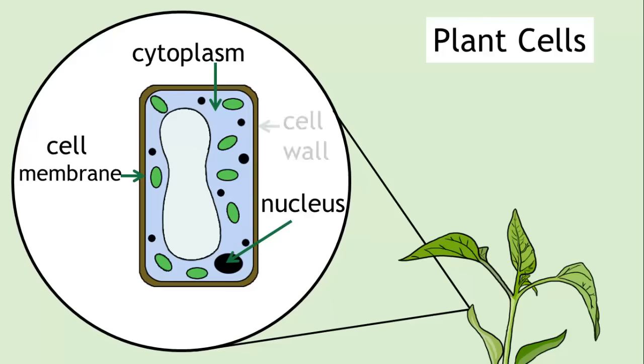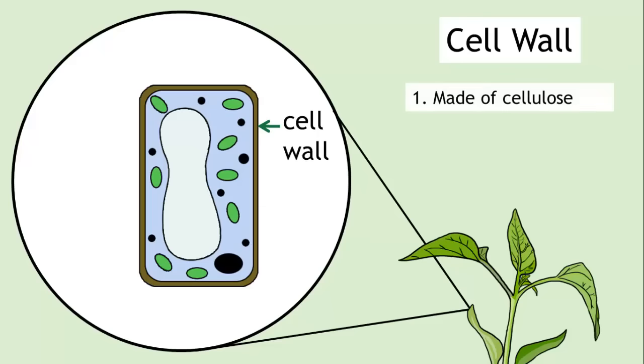For example, they contain a cell wall. A cell wall is made of cellulose and this structure provides support for the shape of the cell.